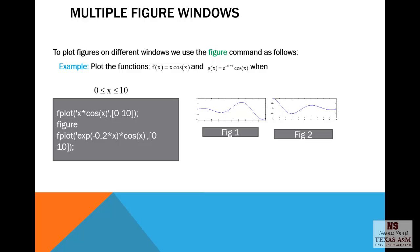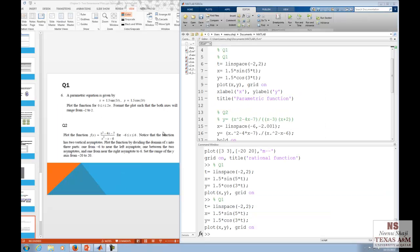Next is how to plot multiple figure windows. To plot figures on different windows, we use the figure command as follows. Plot the functions f of x equals x cos x, g of x equals e to the negative 0.2 x cos x, when x is between 0 and 10. So here, we have used just the fplot command. Then figure. So the figure command should come just before the next plot command. So we get the two figures into windows. We will work on some questions from your textbook, Gillett.